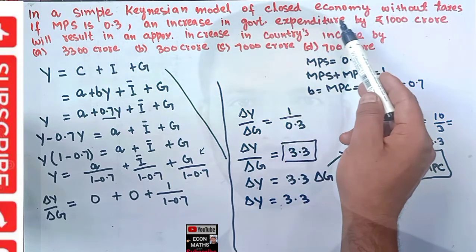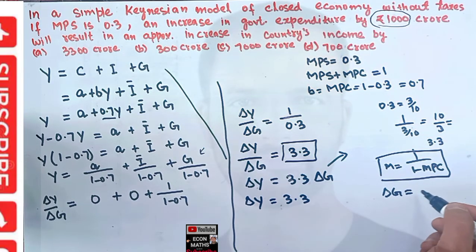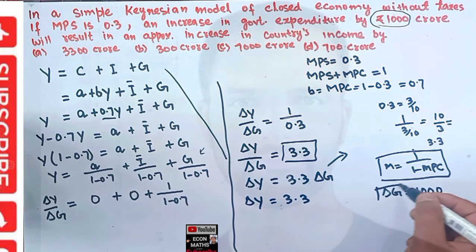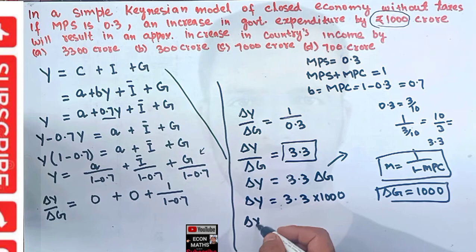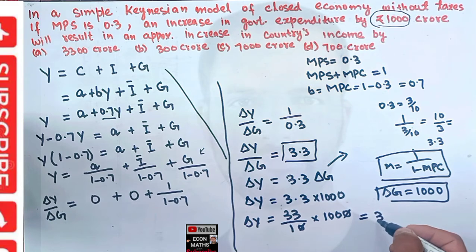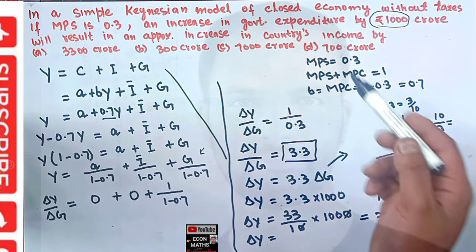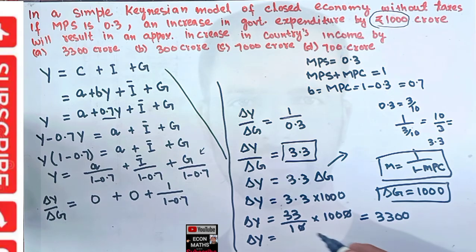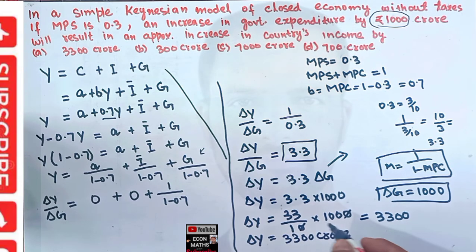Since the government expenditure has changed by 1000 crore, delta G = 1000. Therefore, delta Y = (33/10) times 1000 = 3300 crore. The change in income as a result of a change in government expenditure by 1000 crore leads to an increase in national income by 3300 crore. So the correct option is 3300 crore. I hope I made myself clear in this video. Thank you.